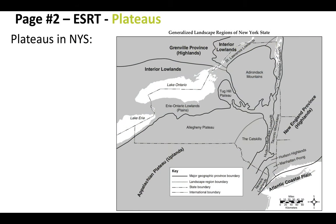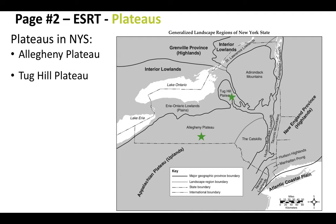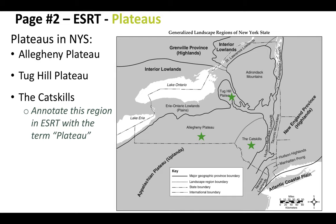For this lesson you'll be using page two of your reference table — the Generalized Landscape Regions of New York diagram. Looking at plateaus in New York State: our first example is the Allegheny Plateau in central New York. Another example is the Tug Hill Plateau, a bit further north and east. The Catskills is also considered to be a plateau, which isn't intuitive because it doesn't have a label — so annotate your reference table with the word 'plateau' in the Catskill region.